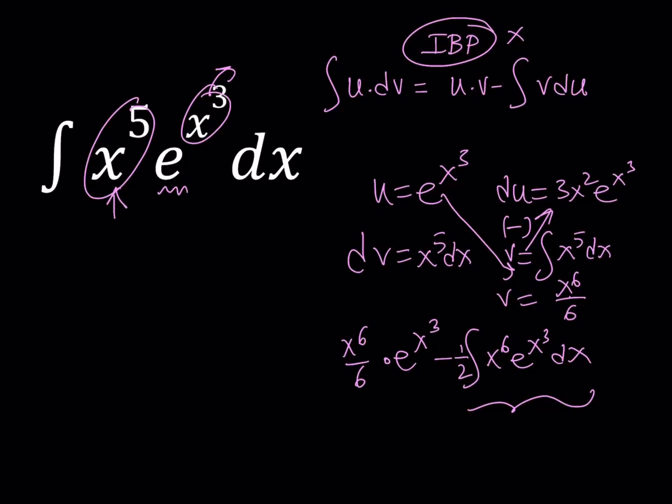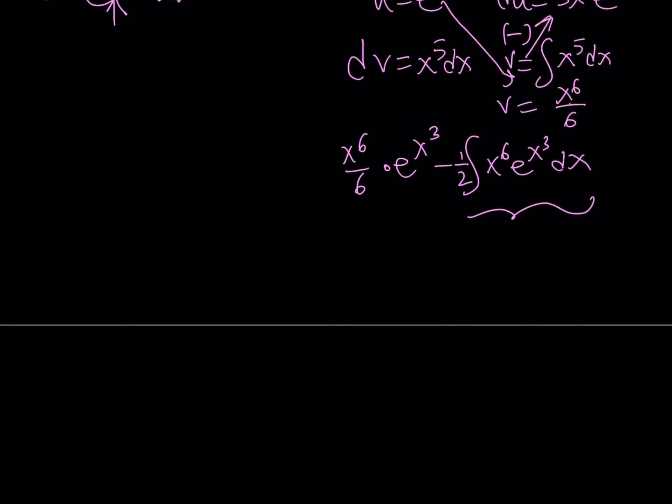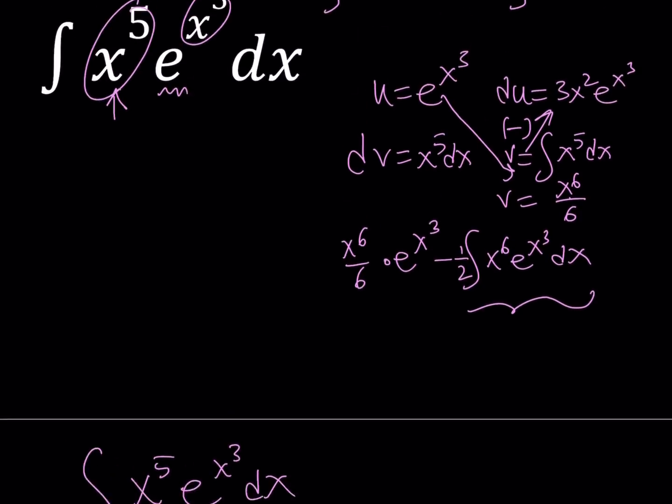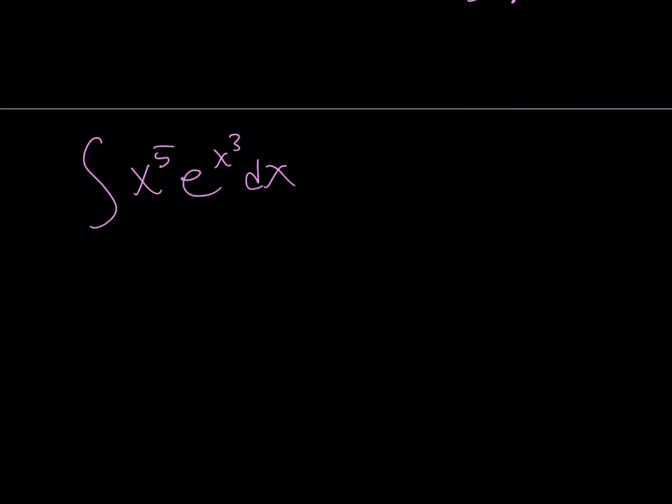Let's take a look. We have x to the fifth, e to the power x cubed dx. I'm going to separate the x to the fifth into two pieces. One of them is going to be x cubed, that's going to go with e to the x cubed. And the rest is going to be x squared dx.